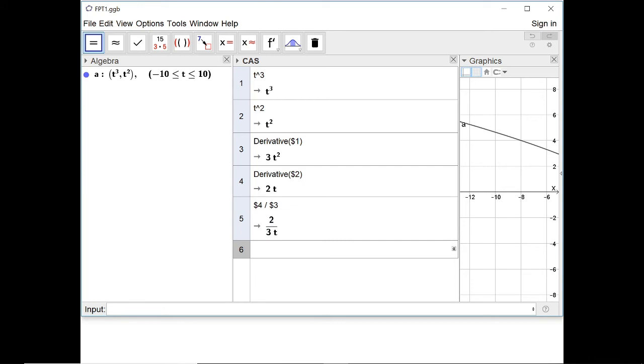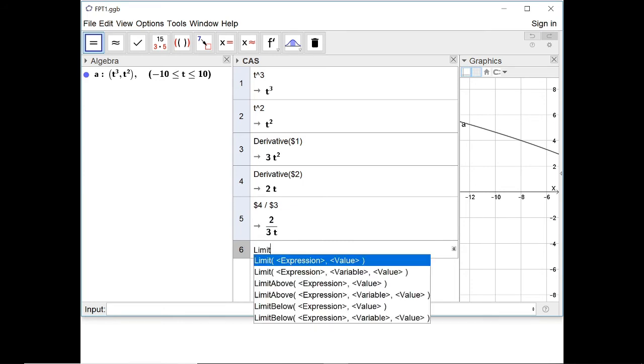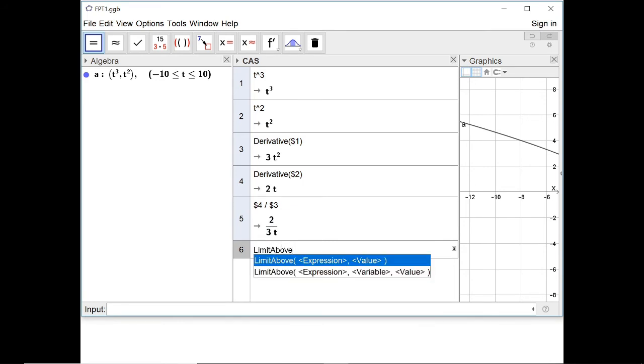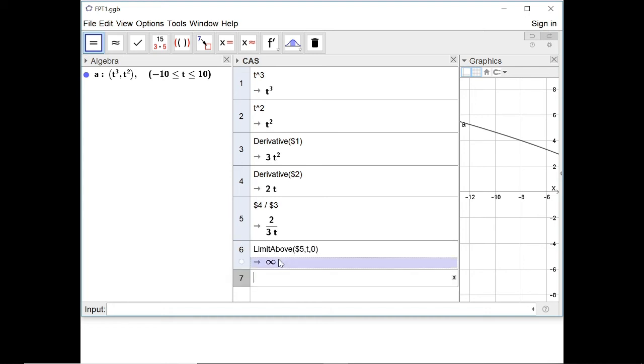So I need to use the limit above and the limit below function. So the limit above of expression five as t approaches zero, I get the answer infinity.